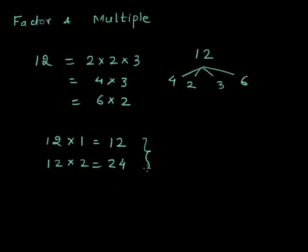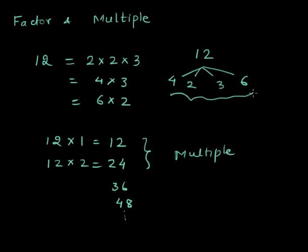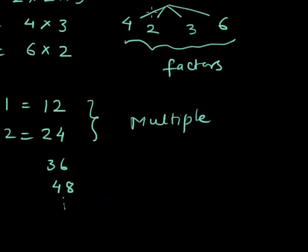These 12, 24, 36, 48 are called multiples of 12. These are multiples and these numbers are called factors. So factors are the numbers which generate the number, and multiples are those numbers which are generated by the number.